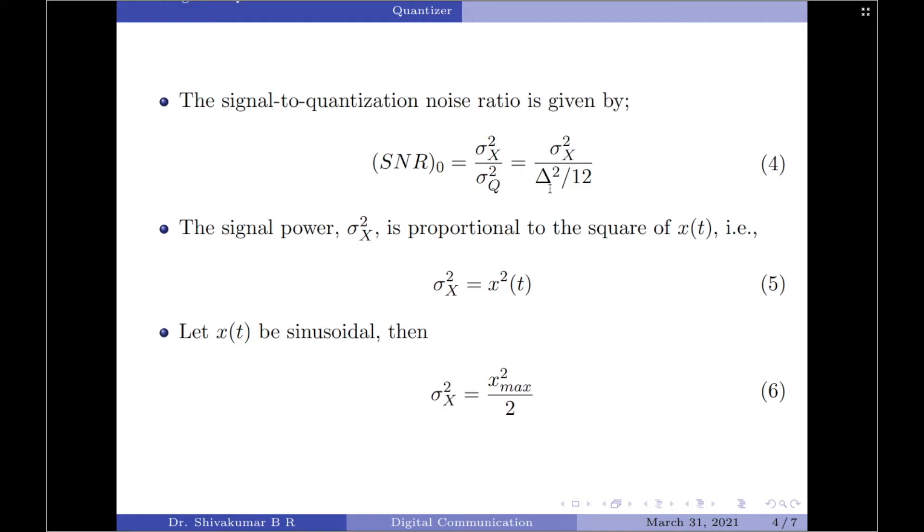Further, we know that the signal power which is represented by σ_X² is proportional to the square of the input signal x(t), that is σ_X² equals x²(t). Now, let us assume that x(t) is sinusoidal. Then, the signal power is written as σ_X² equals x_max²/2.